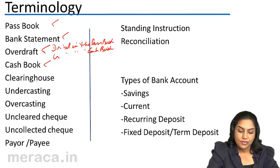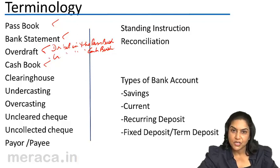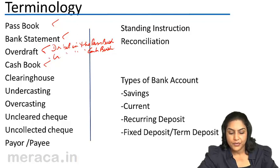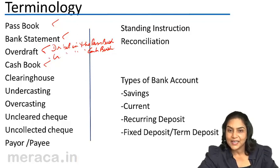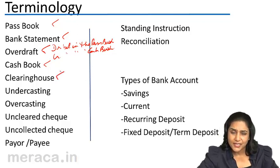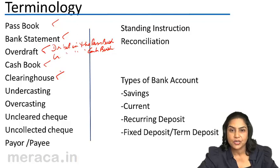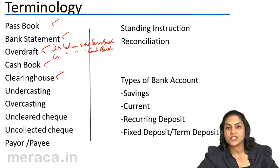A clearinghouse is an association of member banks under the management of a settlement bank, which is created to facilitate interbank settlement. Undercasting refers to totaling, and undercasting is an undervaluation — when the total is less than what it should be, there is a case of undercasting.